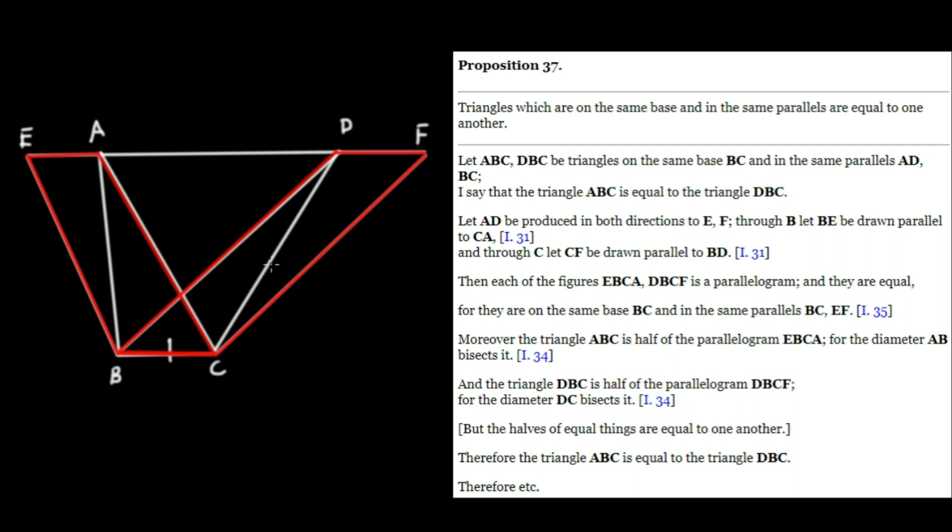The same reasoning for this other parallelogram. The triangle DBC is half this whole parallelogram, DBCF, because its diameter bisects it.